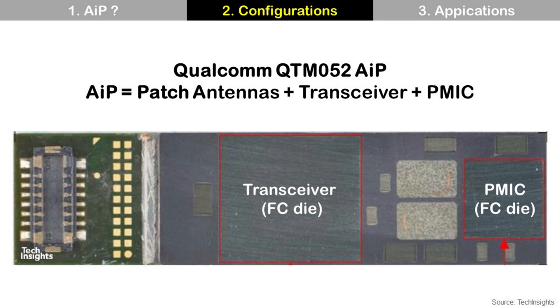For the Qualcomm QTM052 AIP module, it contains a transceiver die, a power management die, and an antenna pattern — all in one package.